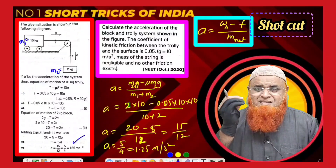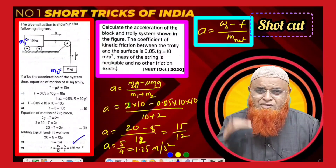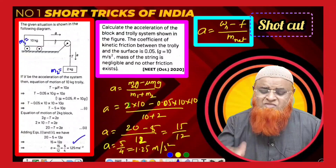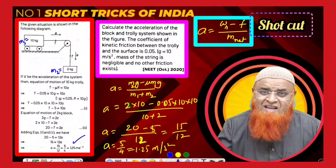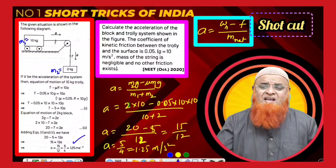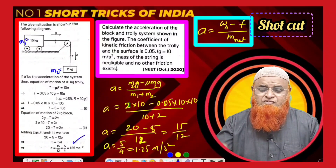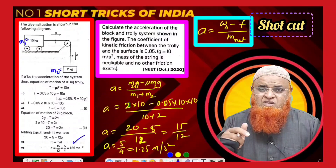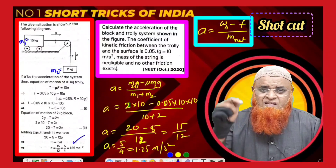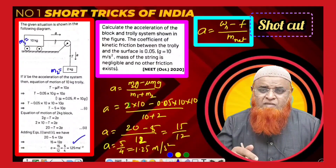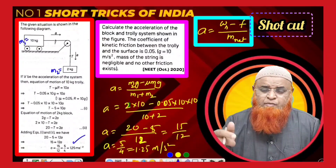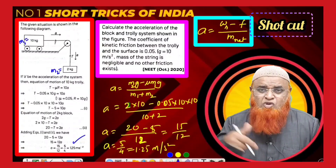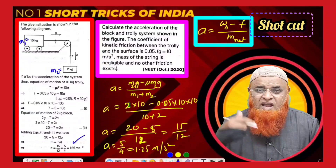The formula — acceleration equals weight of hanging body minus friction force divided by net mass — is a simple solution for problems of this type. If you want more problems of this model, comment below and subscribe to the channel.